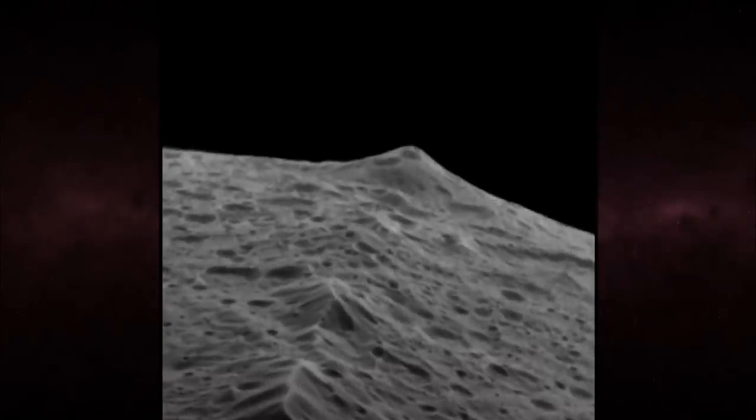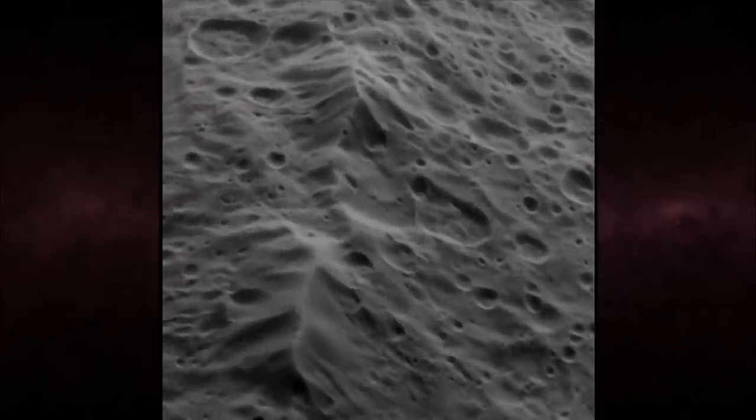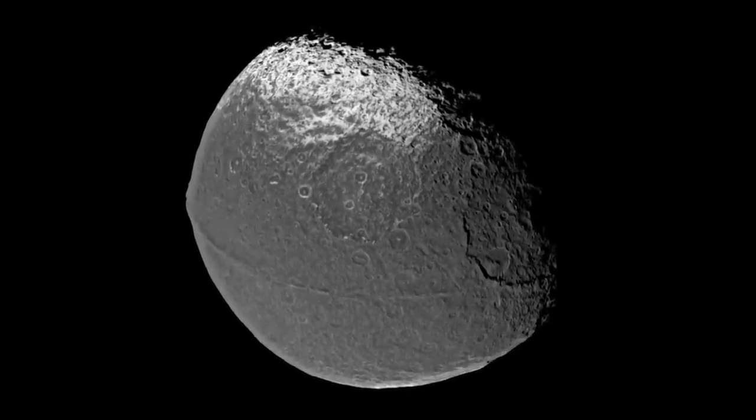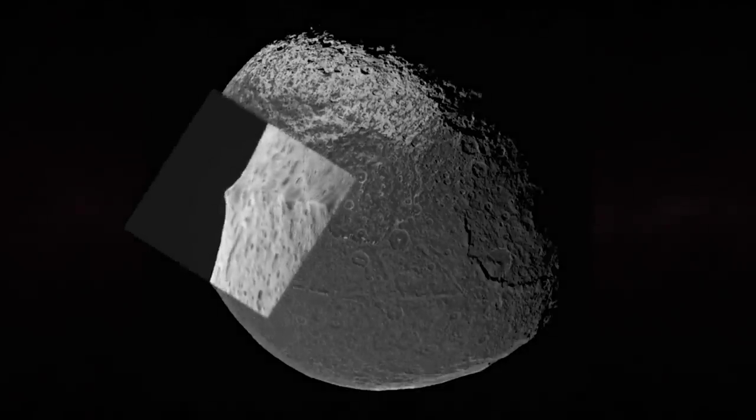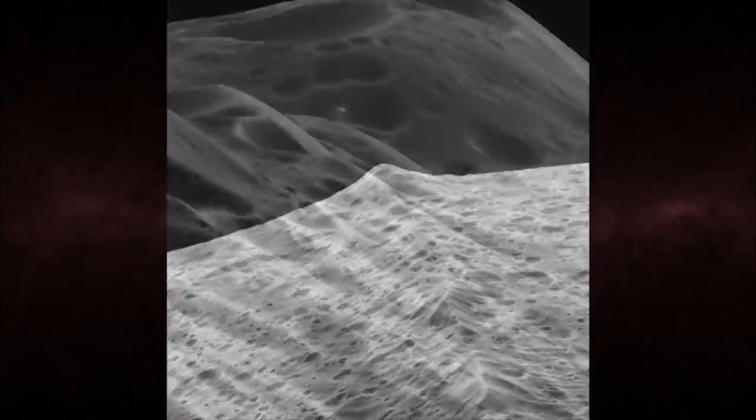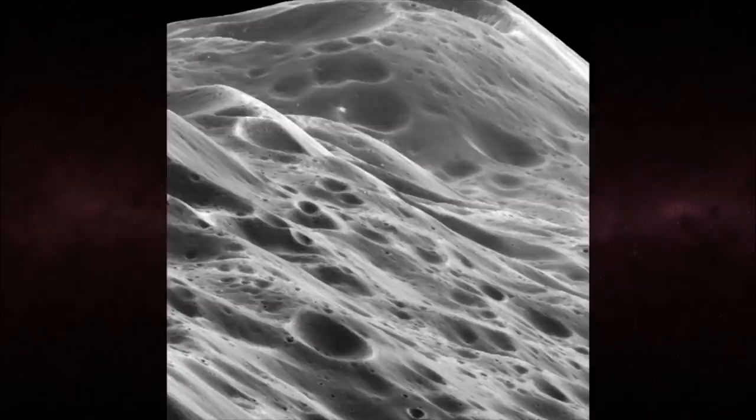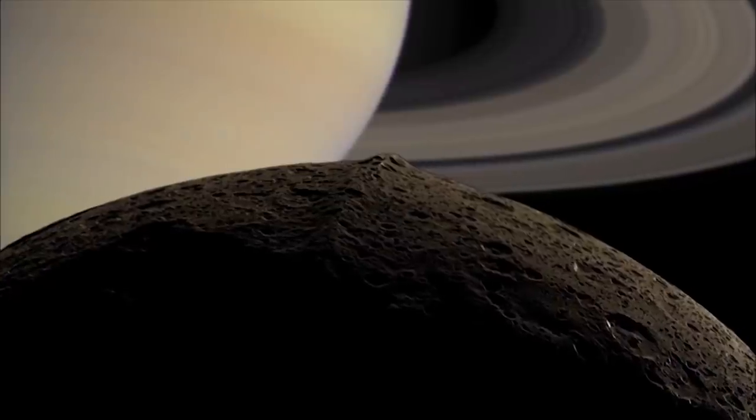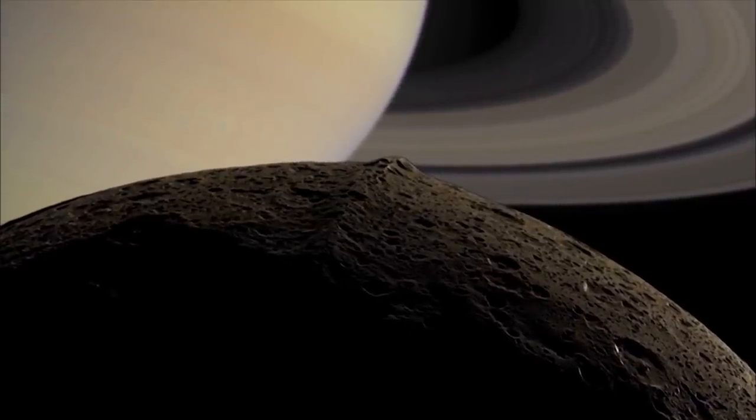Even stranger is a long ridge Cassini discovered running along the equator of Iapetus, giving it the appearance of a walnut. In places, the ridge is 13 kilometers high. The forces that created this bizarre feature are not well understood, but it likely happened when Iapetus was spinning more rapidly than it is now and had more internal heat shaping its surface.